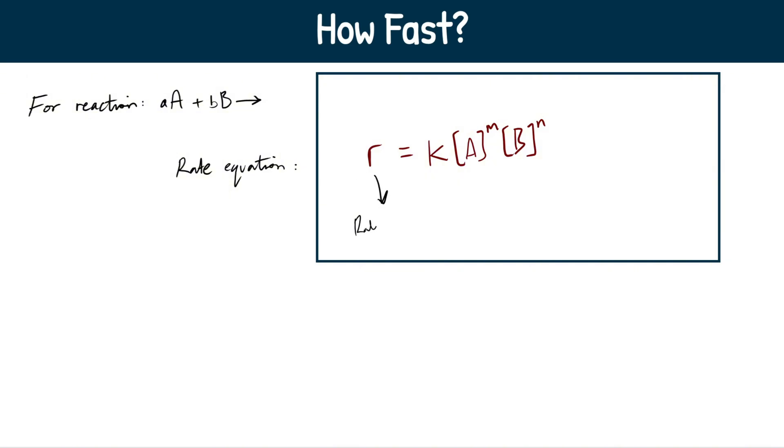Lowercase r is our rate, our rate of reaction. The standard units for this is going to be moles per decimeter cubed per second because rate is just a change in concentration per time, per unit time. This K right here is our rate constant. So anytime you see K, basically just think constant, rate constant.